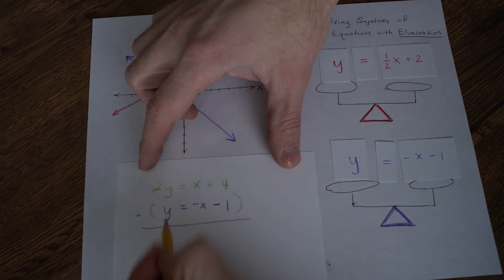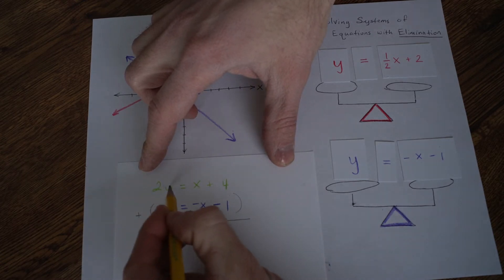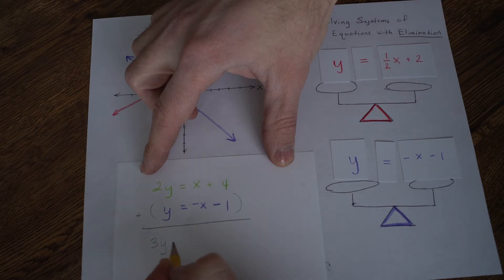So let's add these two together. 2y plus 1y is 3y.